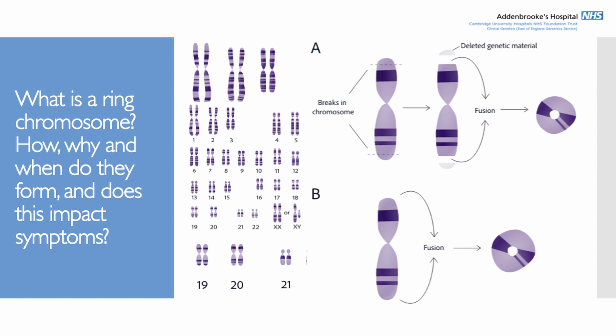Normally chromosomes are linear structures. A ring chromosome, put simply, is when one of these structures forms into a ring instead. One way this can happen is when there's a break at both ends of one of those chromosomes — thinking about chromosome 20 specifically — a little bit of genetic material is lost off each end, and then those two ends fuse together to make a ring.